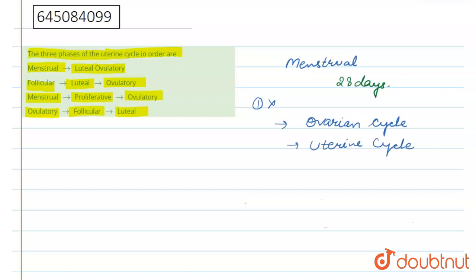Now for menstrual cycle in uterine phase, the second option - follicular, then luteal, then ovulatory - is also wrong. Why? Because follicular phase represents ovarian changes, not uterine. So this one is also wrong.